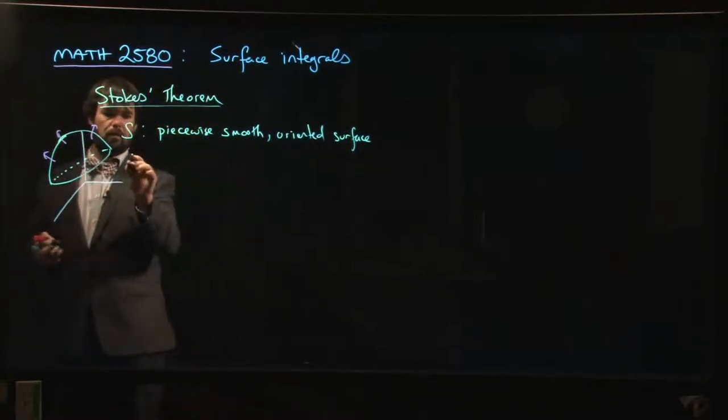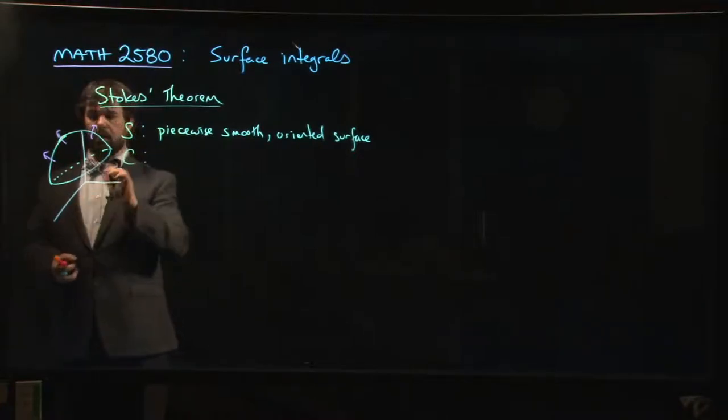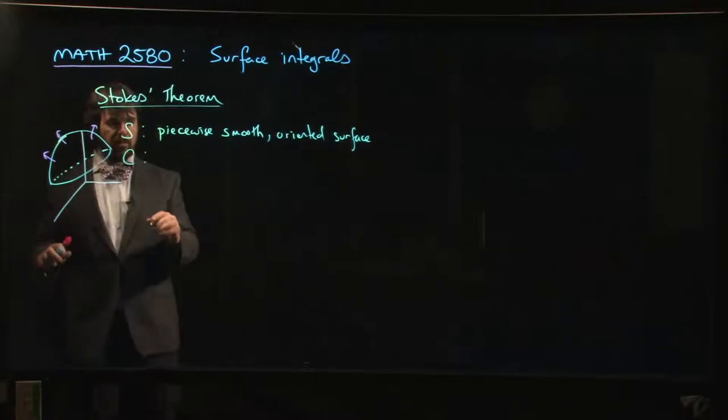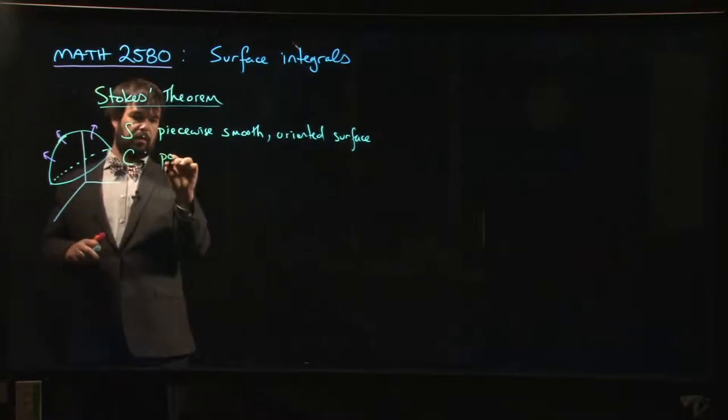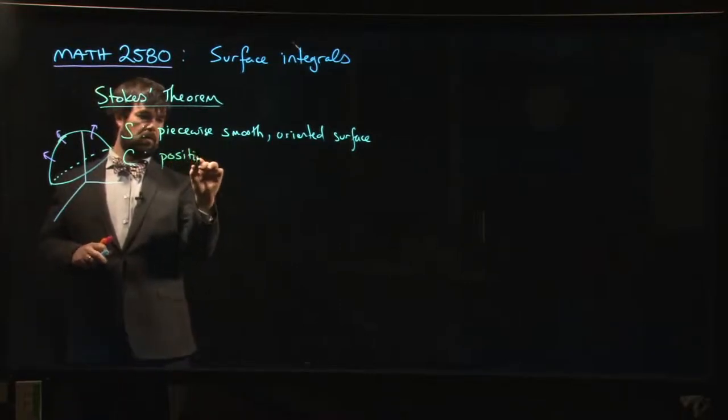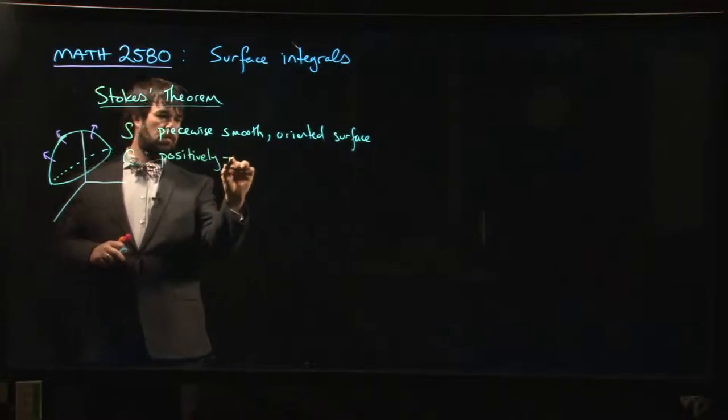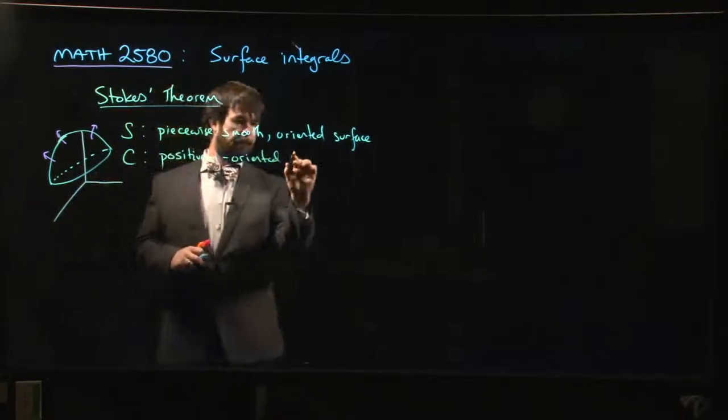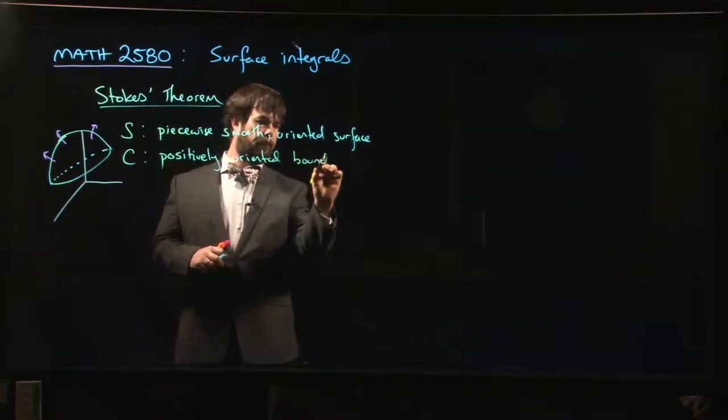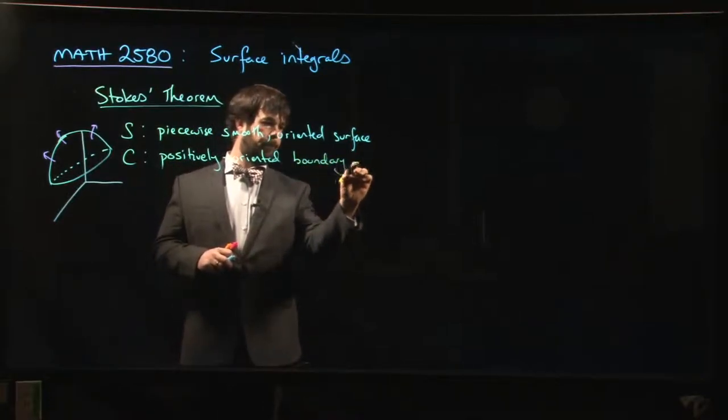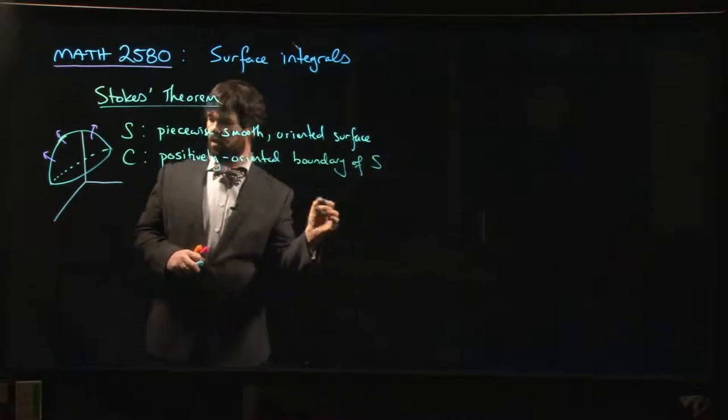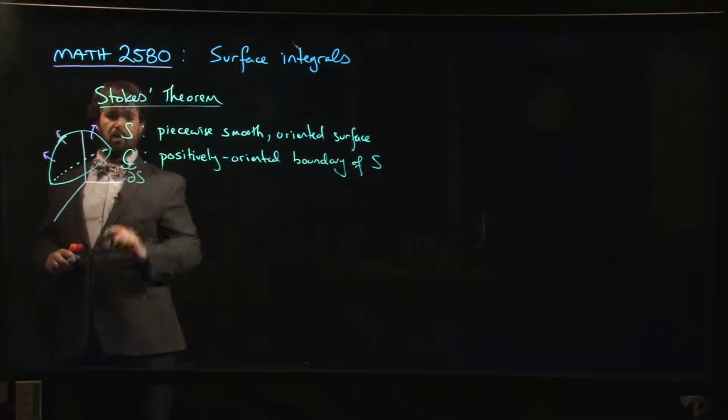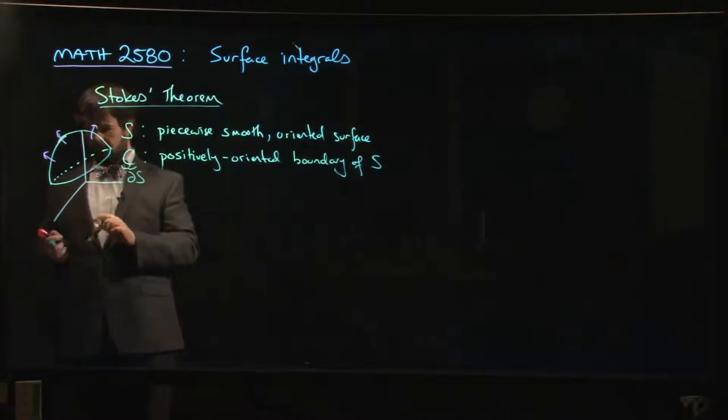The next thing we have is we've got a curve C. C is going to be the boundary of our surface. So our surface has boundaries. So C is going to be the positively oriented boundary. And so we might write C as the boundary ∂S.